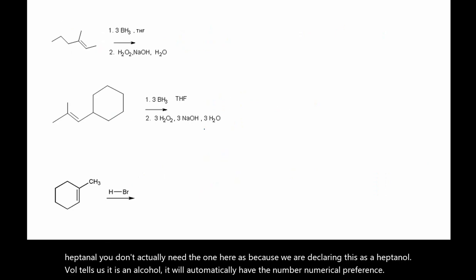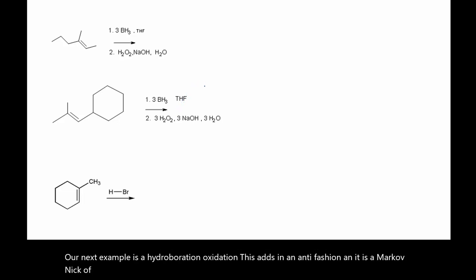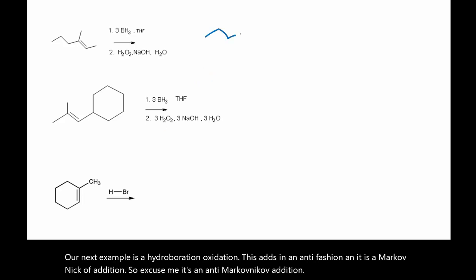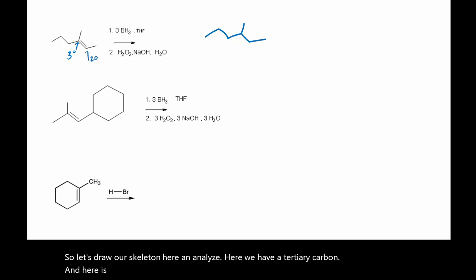Our next example is a hydroboration oxidation. This adds in an anti-fashion and it is an anti-Markovnikov addition. So let's draw our skeleton here and analyze. Here we have a tertiary carbon and here is a secondary carbon.